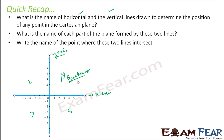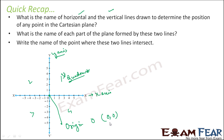The point where the x-axis and y-axis intersect is called the origin, denoted O. The origin has coordinates 0 comma 0, because both the x and y coordinates are zero at that point.